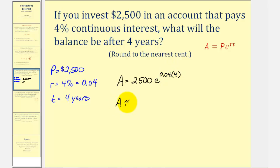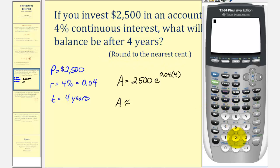So now we'll go to the calculator to get a decimal approximation for this and round to the nearest cent or to two decimal places. So we have 2,500. If I press second LN for second natural log, it brings up E raised to the power of.